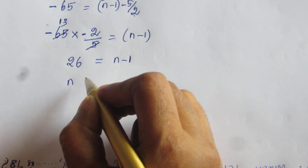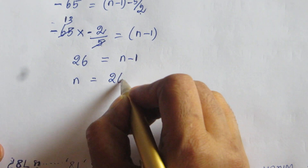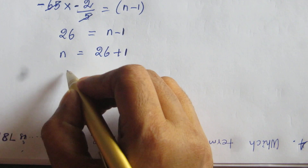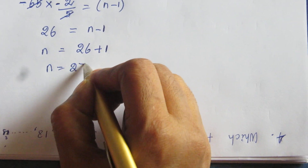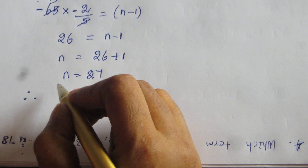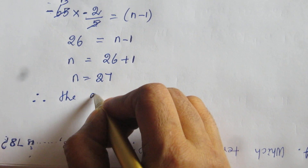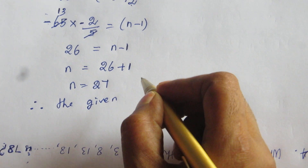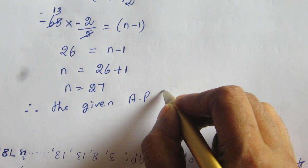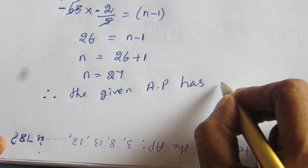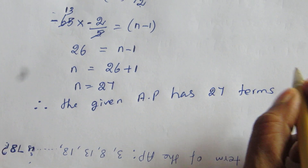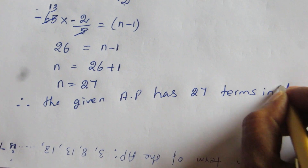So N equal to 26 plus 1, therefore N equal to 27. Therefore, the given AP has 27 terms in it.